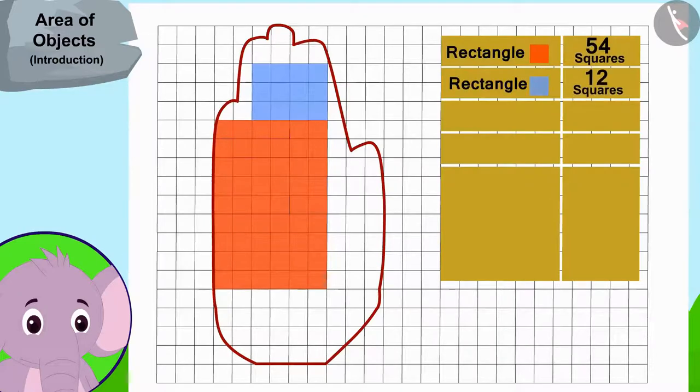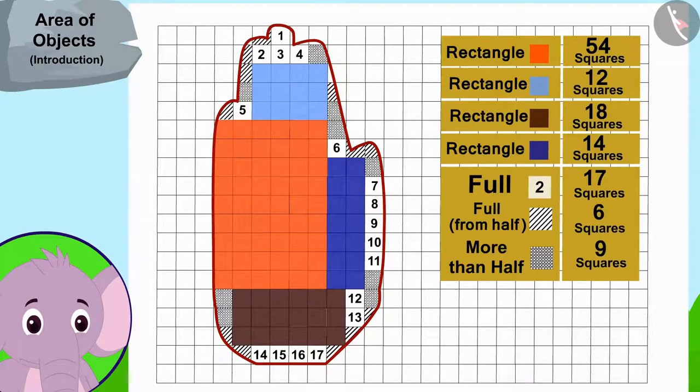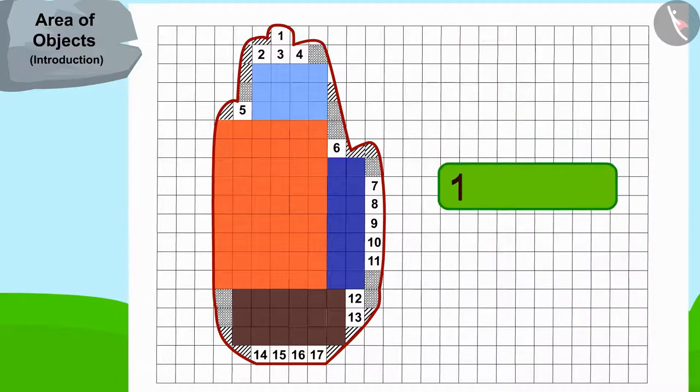You can also find the area of Appu's hand impression by making rectangles in this way. The area of Appu's hand impression is one hundred and thirty square centimeters.